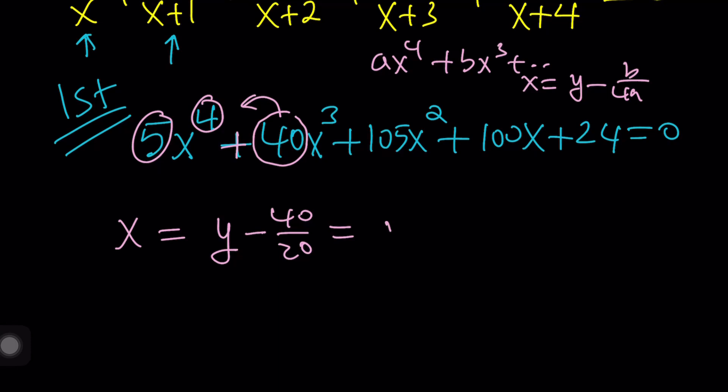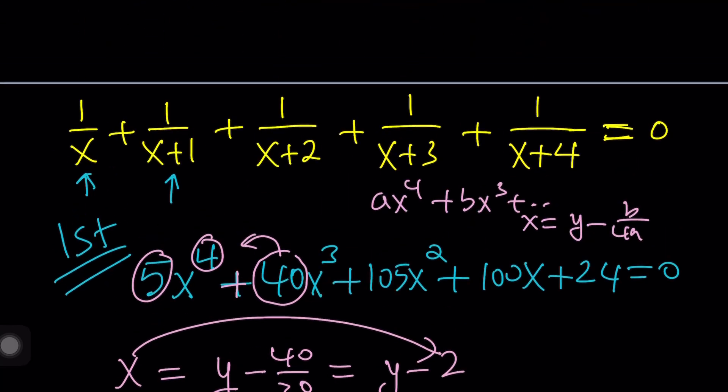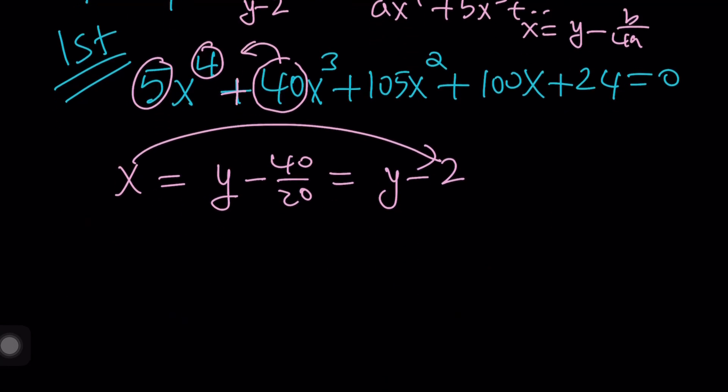Now, this turns into y minus 2. So, we're going to replace x with y minus 2. And that kind of makes sense. Let me show you something real quick. If you replace x with y minus 2, this guy over here in the middle becomes y. How cool is that? Now, let's do it. And if you do it here and here and here and here everywhere, you're going to get something super nice.